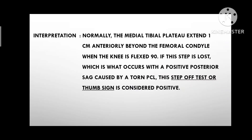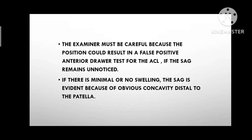Interpretation: normally the medial tibial plateau extends 1cm anteriorly beyond the femoral condyle when the knee is flexed 90 degrees. If this step is lost, which is what occurs with a positive posterior sag caused by a torn PCL, this step-off test or thumb sign is considered positive. The examiner must be careful because the position could result in a false positive anterior drawer test for the ACL if the sag remains unnoticed. If there is minimal or no swelling, the sag is evident because of obvious concavity distal to the patella.